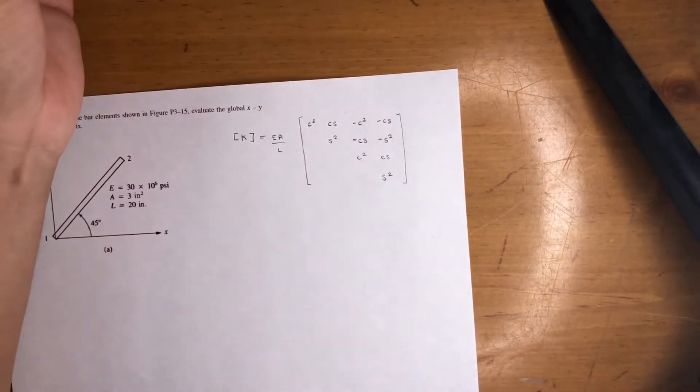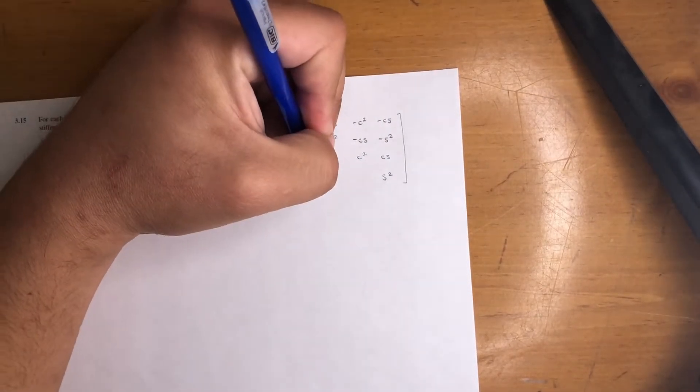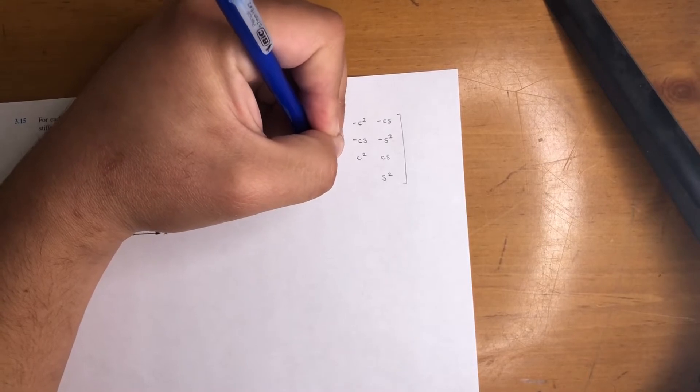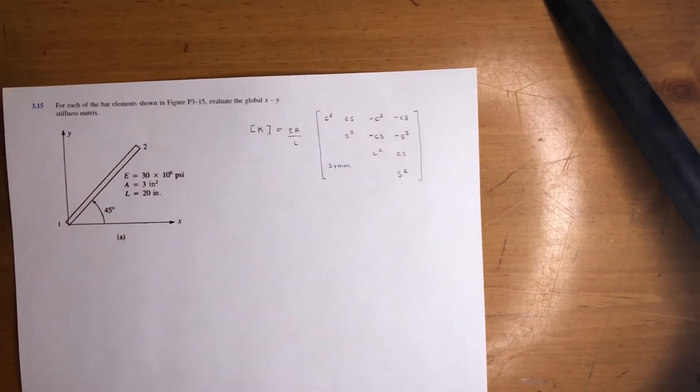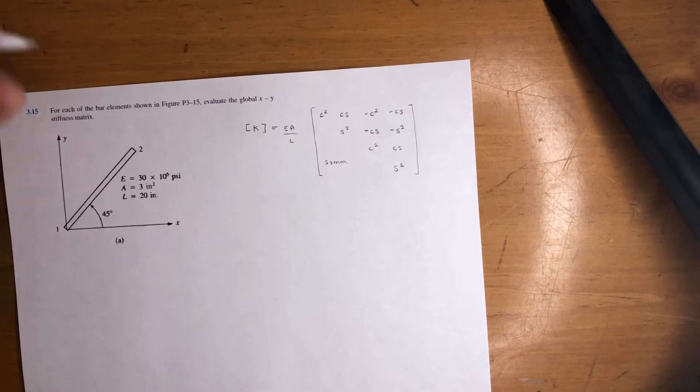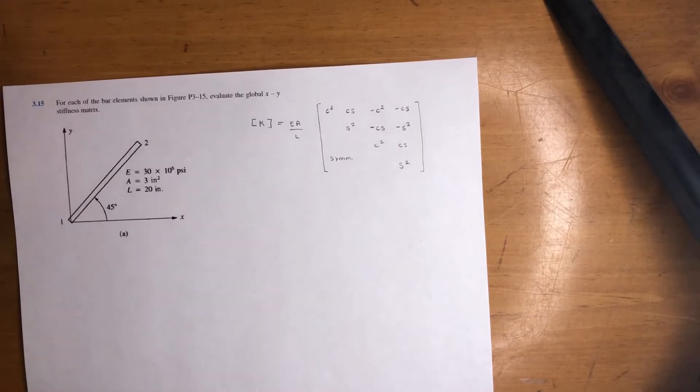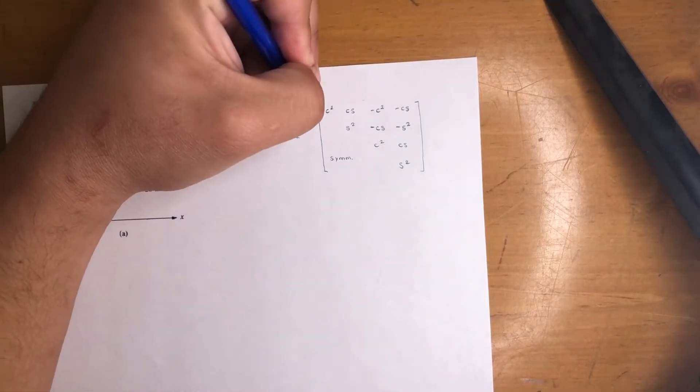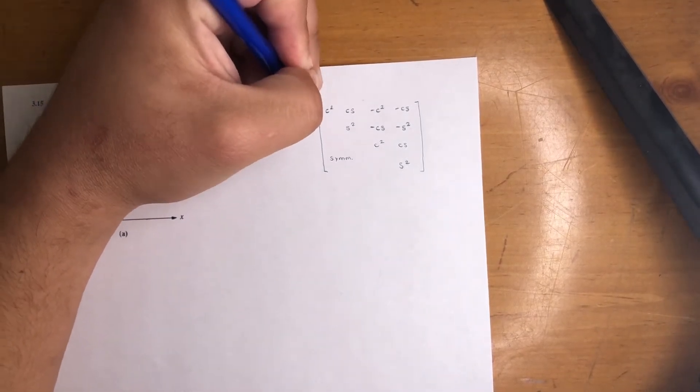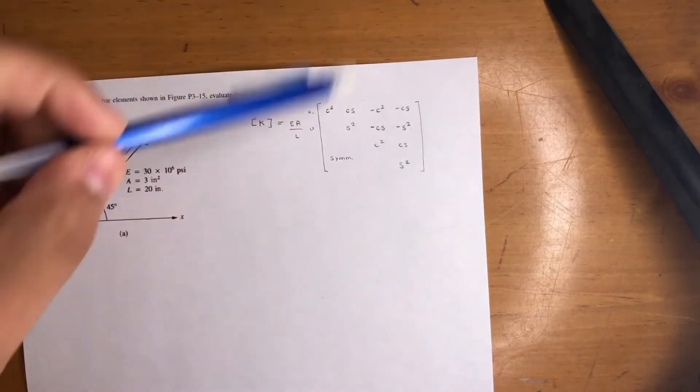This is the global XY stiffness matrix with respect to the XY coordinate system. In this case, we just have one bar, but you could have hundreds or thousands of these in real life, and then in exams maybe three or four. We used to have nodes one, nodes two, all that good stuff.